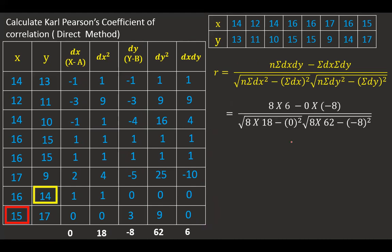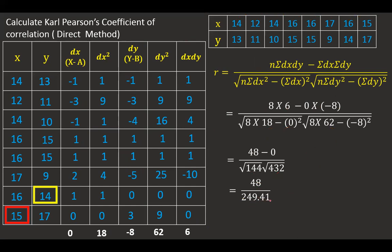Now substituting into the formula, where n = 8 (there are 8 data points). The calculation gives 48 minus 0 in the numerator, divided by the square root of the product of the denominator terms, giving approximately 48 divided by 49.41, which equals 0.19. This gives a weak correlation. That is how you calculate Pearson's coefficient of correlation using the shortcut method. Thank you very much. Have a good day.